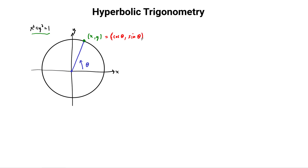Now, this is not the only way to do this. Instead of using the angle, we can use the area of this little region here. So let's say that the area of this is a Greek letter tau instead of theta. So tau here equals the area of this sector of the circle - the area of this sector.